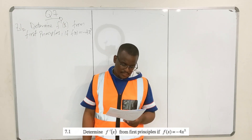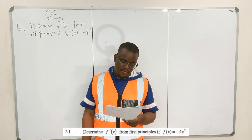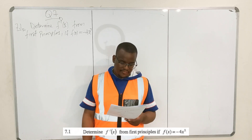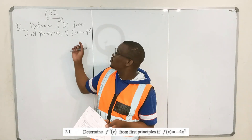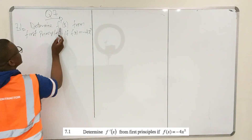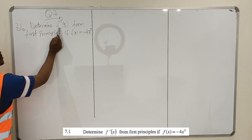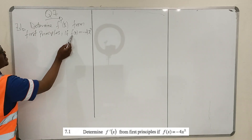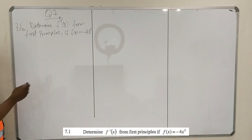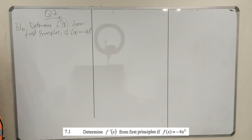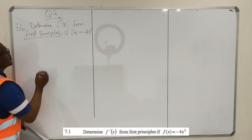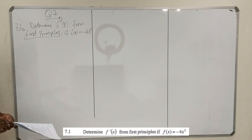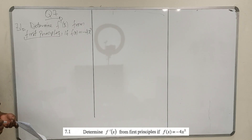Determine f prime — the derivative of f — from first principles if f of x is equal to negative 4x squared. So they are saying find the derivative of f from first principles if f of x is that. They are saying find that derivative using the derivative definition.